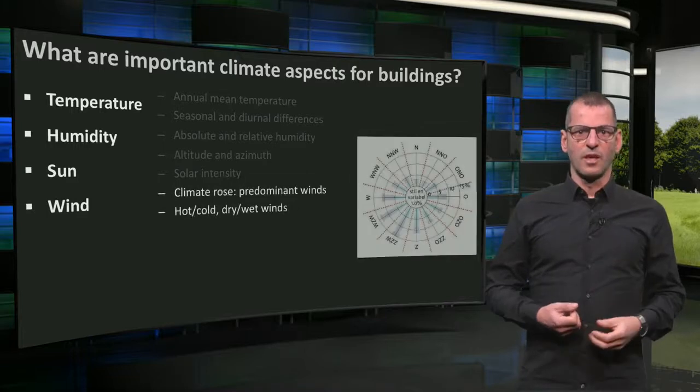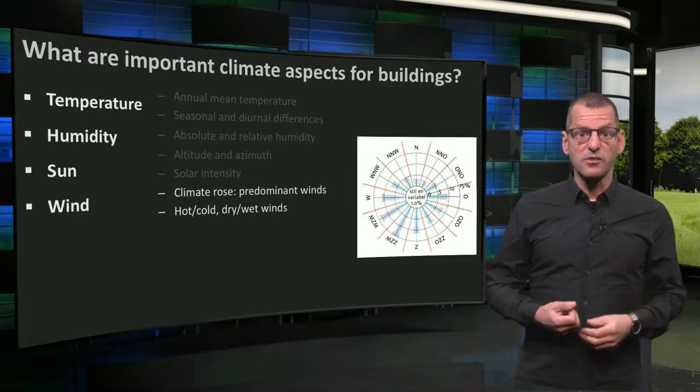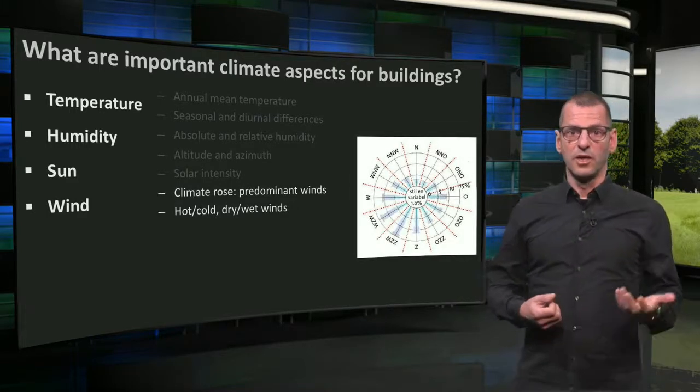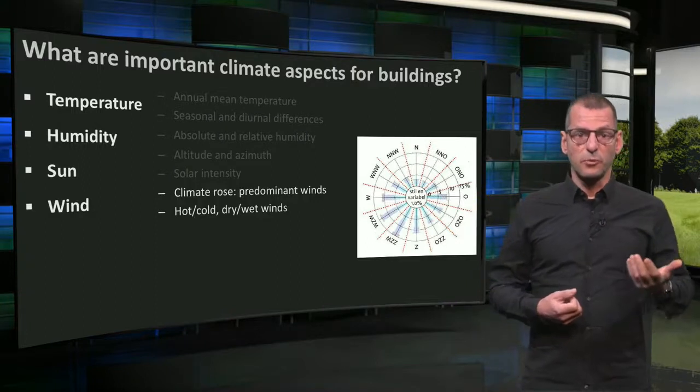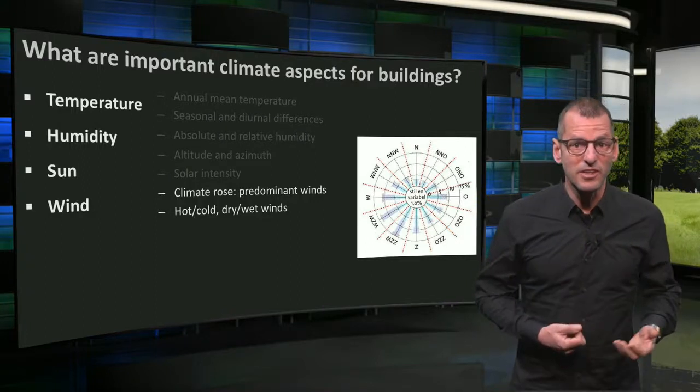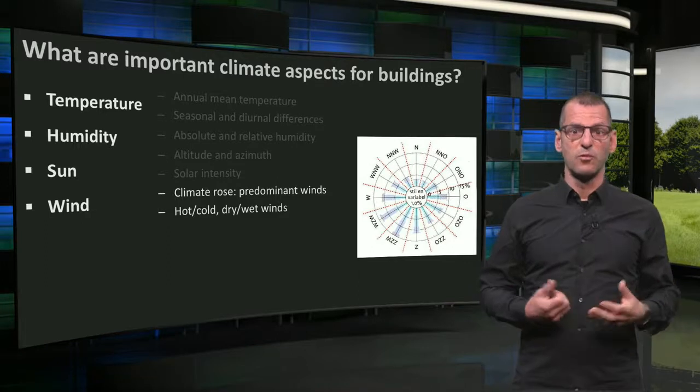Wind: A climate rose tells you the predominant winds, and if you understand the topographical situation, you can tell if these winds are mainly wet or dry, warm or cold.